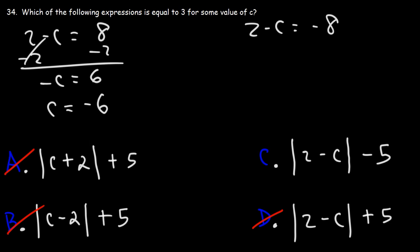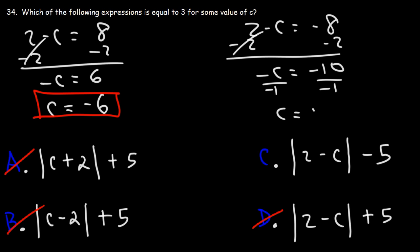So that's one possible answer. For the other one, we're going to subtract 2. Negative 8 minus 2 is negative 10. And then divide by negative 1. So c is positive 10.